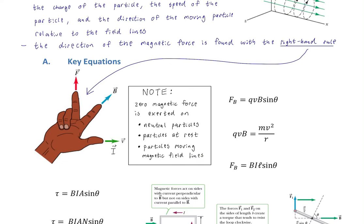Note that zero magnetic force is exerted on neutral particles — particles with no net charge don't experience a force in a magnetic field. Particles at rest experience no magnetic force either, and neither do particles moving parallel to magnetic field lines. The right-hand rule can be used to find the direction of the magnetic field if you know the force and the velocity, or the velocity if you know the magnetic field and the force — as long as you know two of the three, you can find the third.